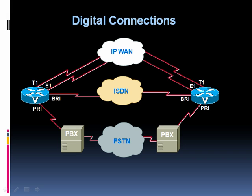Channel-associated signaling doesn't carry near as much information as the Q.931 protocol. It's going to give basic information like on hook or off hook, but not near the information inside an ISDN circuit. In fact, channel-associated signaling uses four bits per channel to represent the signaling for that channel. The bits are called the A, B, C, and D bits, and usually a channel doesn't even use all four bits.